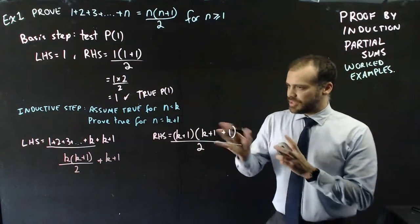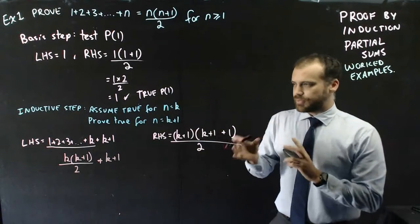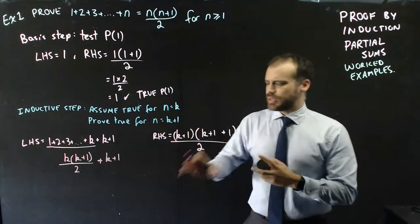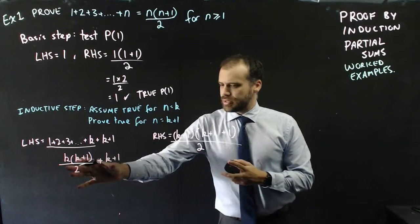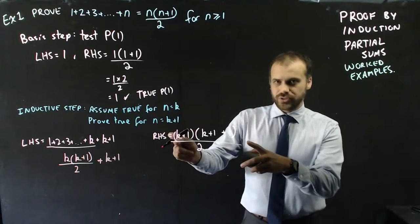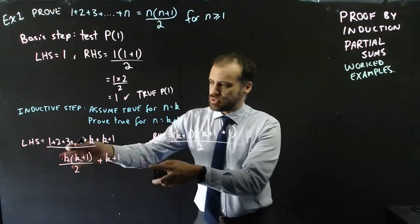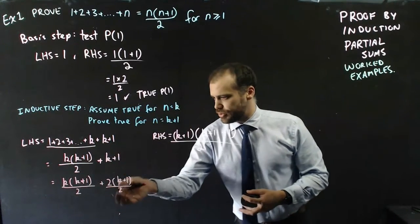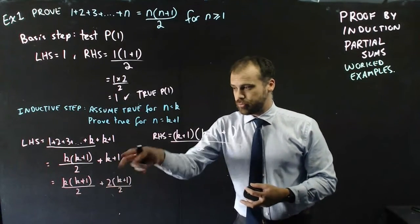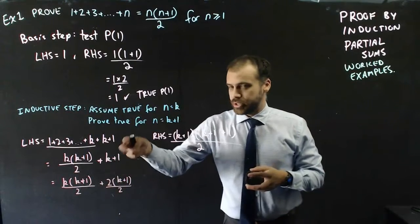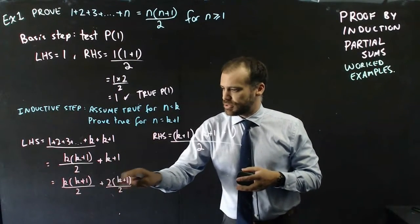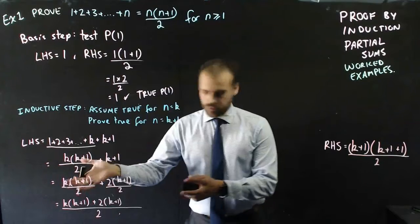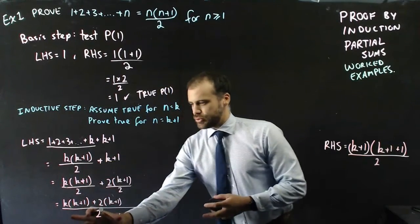You can see they're getting a little similar now. The right-hand side is all over 2, so I should make the left-hand side all over 2 as well. I can do that by multiplying the k+1 term top and bottom by 2, giving 2(k+1) over 2. Bringing those together, everything is now all over 2.